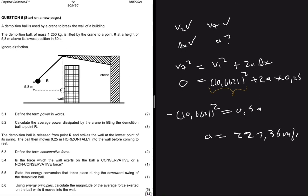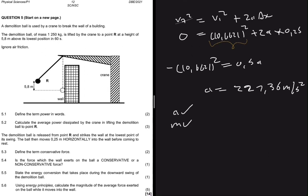So m is 1250, the acceleration is 227.36. There's a minus here, 227.36.